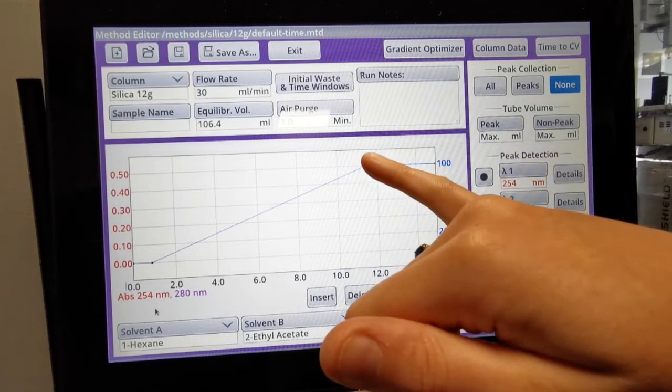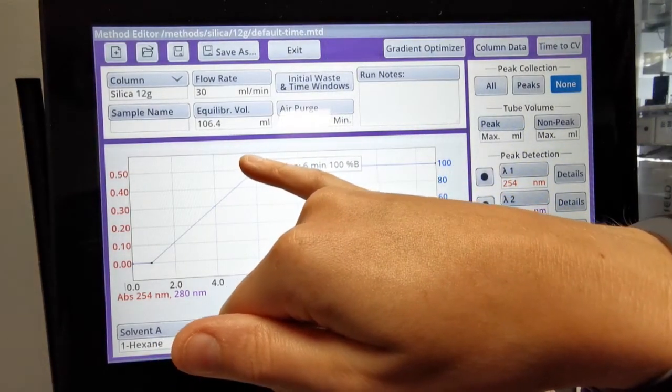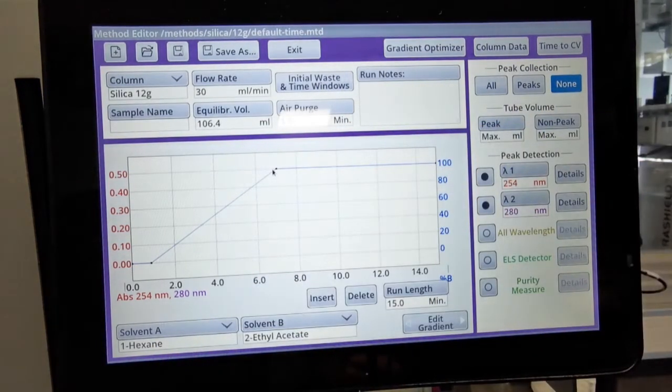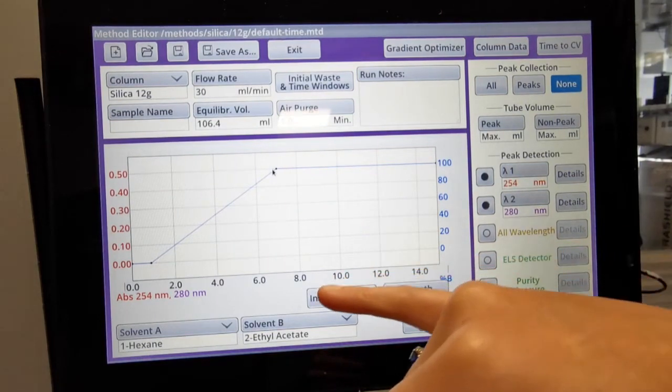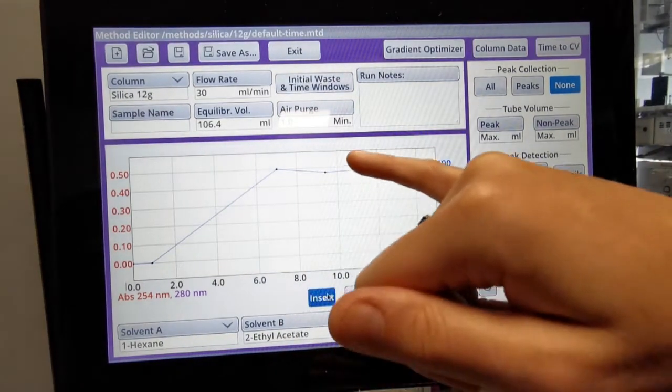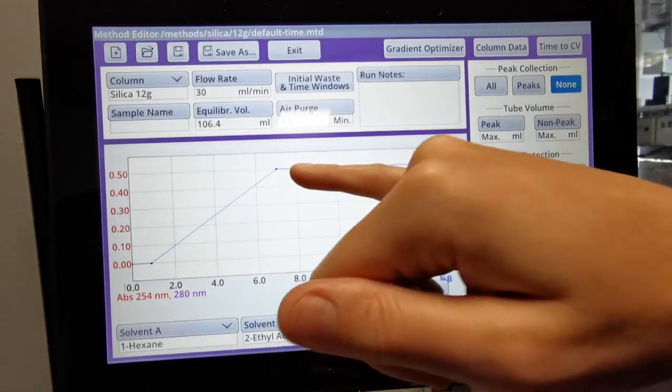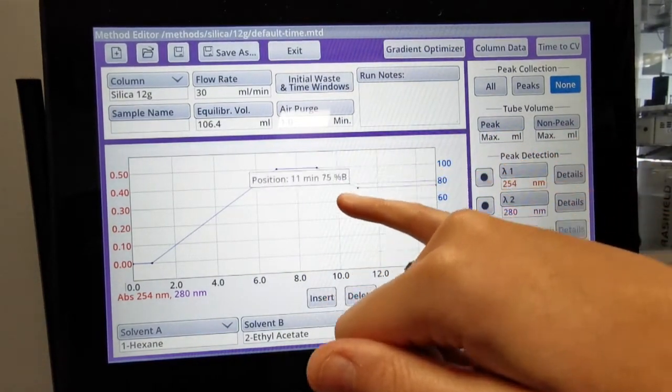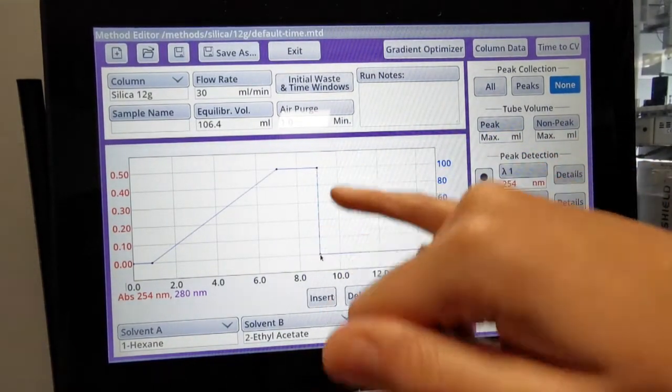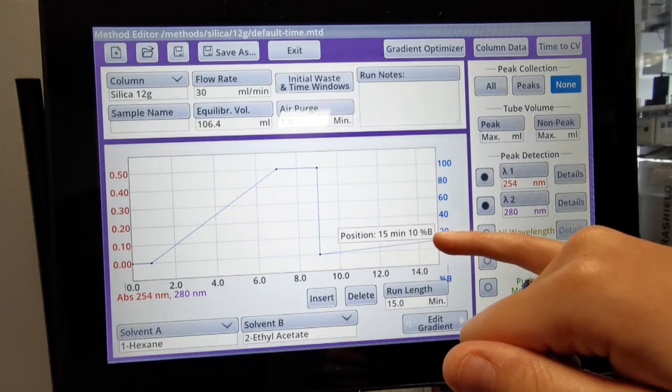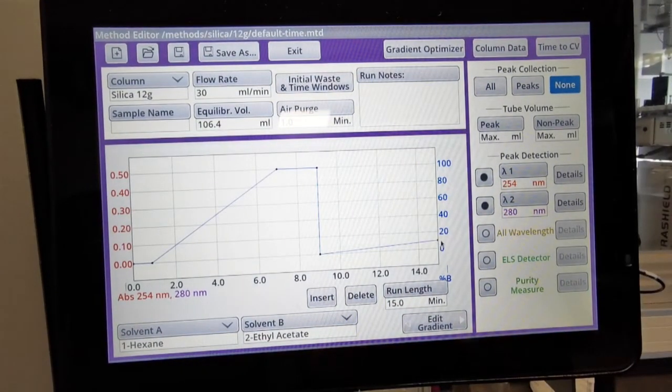have that short hexane ethyl acetate gradient to start. We then want to bring the gradient down, so I insert a couple of points. I'll keep that 100% to have the ethyl acetate wash, bring that right down, and then we'll have a 0 to 10% gradient of the DCM methanol. However, all of this is still set up in hexane ethyl acetate.